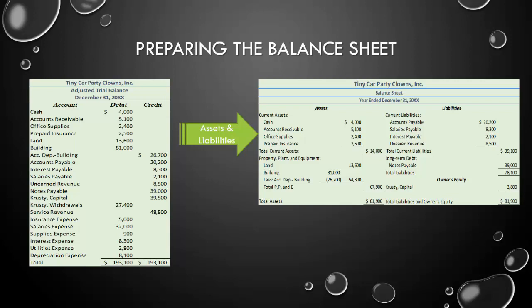For liabilities, the distinction is again one year. Is it something we have to pay off within the next year, or will it take more than one year? Accounts payable, salaries payable, interest payable, and unearned revenue are all things we expect to meet within the next year — current liabilities. Notes payable, however, is a long-term bank loan, so it goes under long-term debt. When we add those together, we have total liabilities of $78,100.